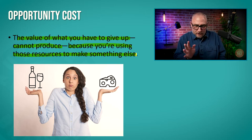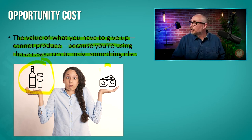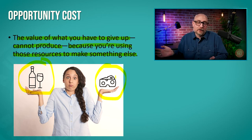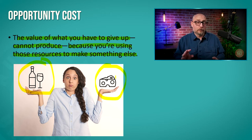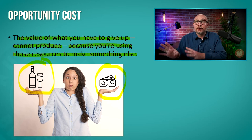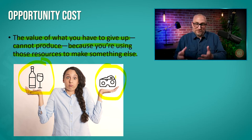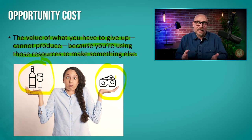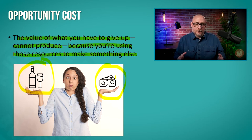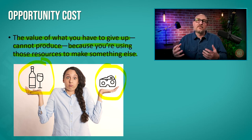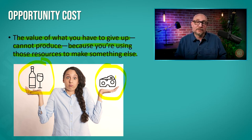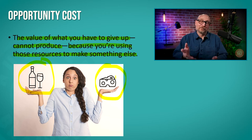Let me put it this way. Let's say we're either going to make wine or we're going to make cheese — one or the other. We have a finite number of resources: finite labor, finite time, finite money. So are we going to make wine or are we going to make cheese? The opportunity cost is whatever the value is of that thing we chose not to make. For example, if you're watching this video right now, you could be watching something else — the value of that something else to your life is your opportunity cost.